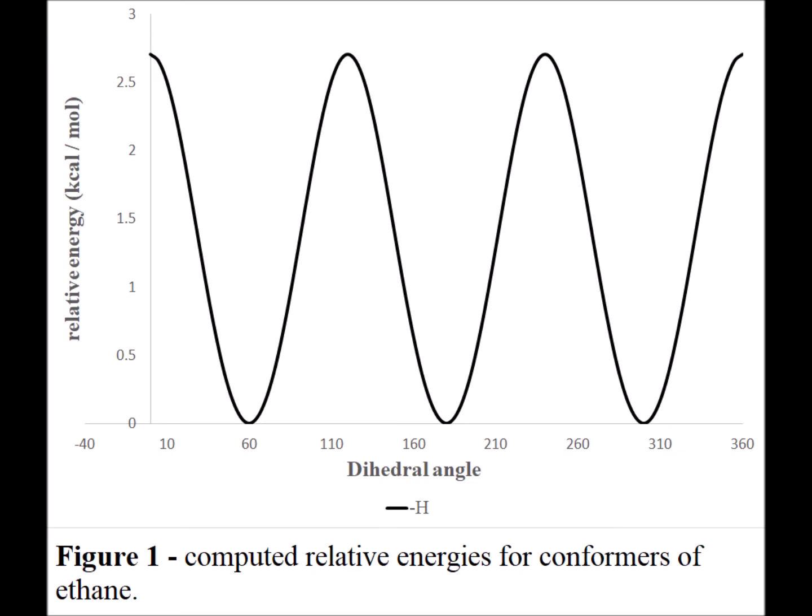Figure 1 shows the computed relative energies of an unsubstituted ethane molecule as we vary the dihedral angle from 0 to 360 degrees. We notice that there are 3 relative maxima, pointed out with the blue arrow, at 0, 120, and 240 degrees for the dihedral angle.